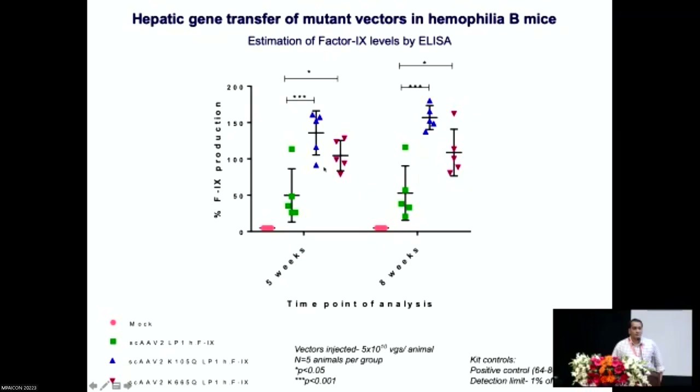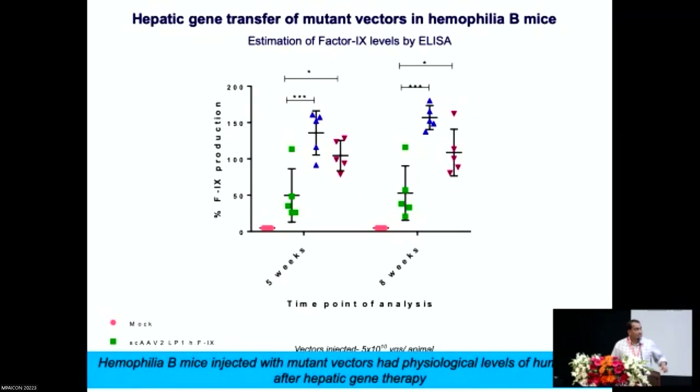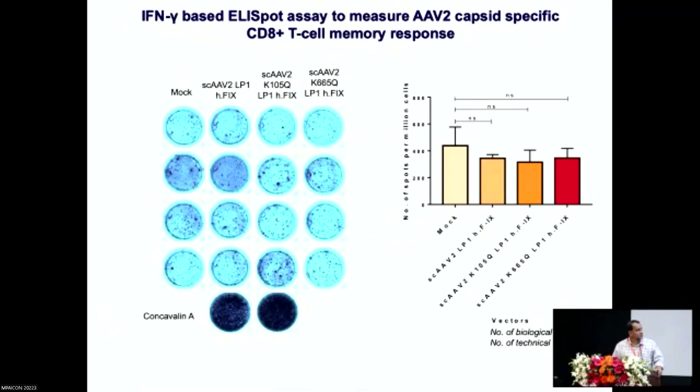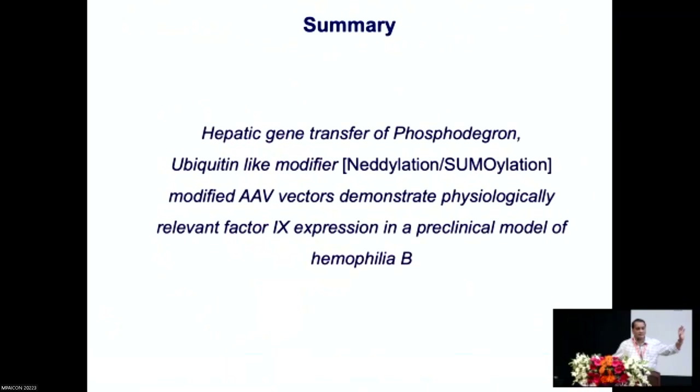One key requirement for any new gene therapy vector is that it must be non-immunogenic. In terms of CD8-mediated T cell response and other assays that we have performed, these modified vectors appear to be non-immunogenic compared to the wild-type vectors. To summarize this part of the work: we have developed improved gene delivery vector systems based on the AAV platform for potential gene therapy of hemophilia, and this is currently undergoing rigorous experiments so we can scale it up to the level of a clinical trial.